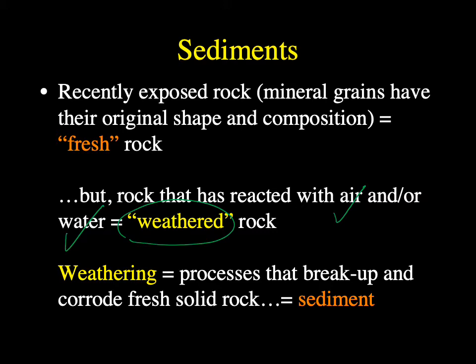The weathering process weakens or breaks up the fresh or solid rock — that's what we want, we want to break it up and make it into sediment. The process of chemically breaking it down through oxygen or water, or physically breaking it down with frost or organisms, starts to break our fresh rock into weathered pieces, which are what we want for sediment.